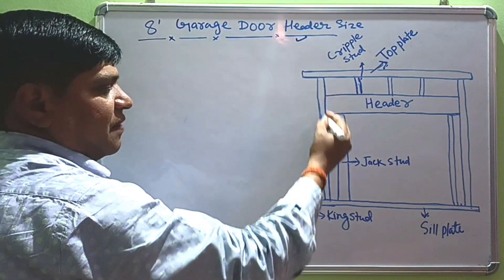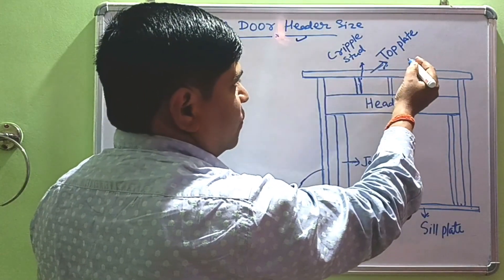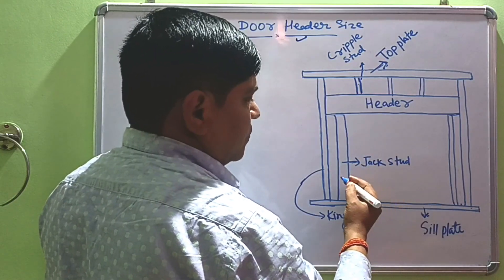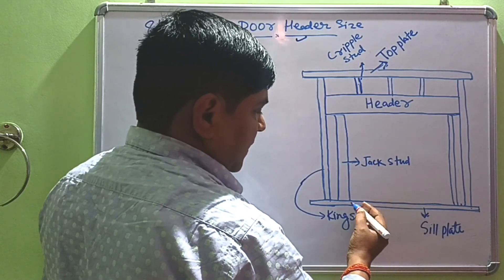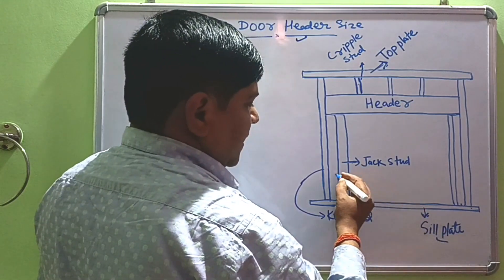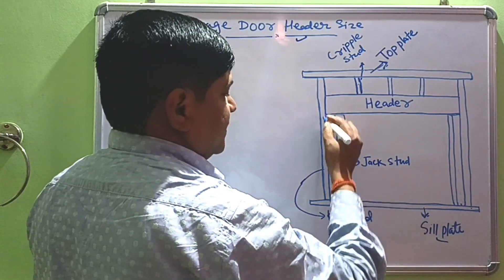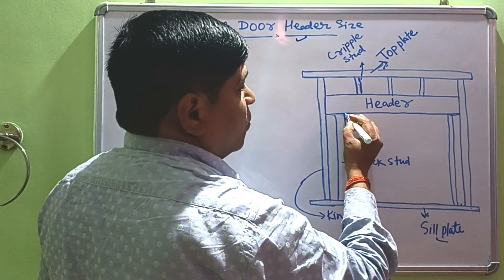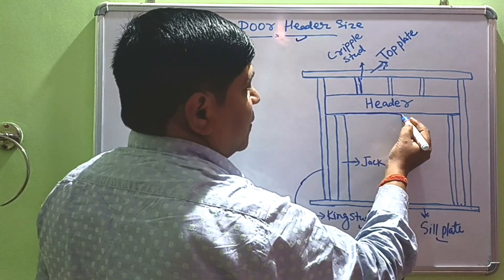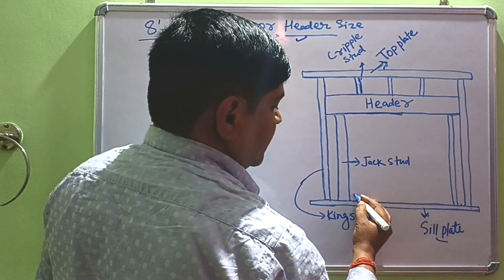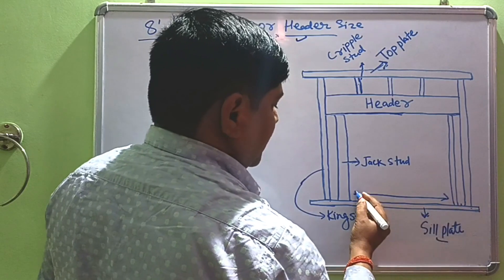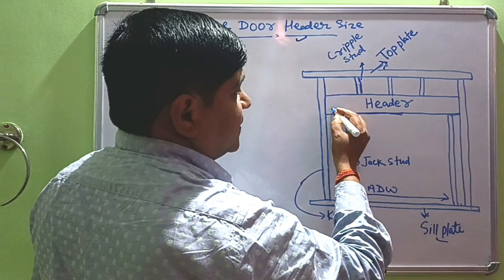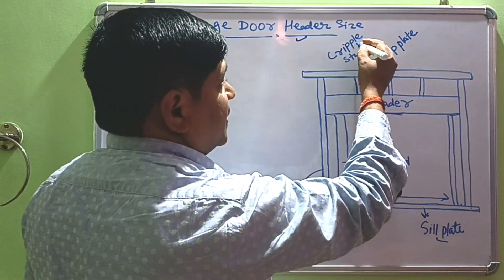Here is the rough diagram. In most cold region countries — the United States and other European countries — most houses are built of wood frame structure. Here is the sill plate, here is the jack stud, king stud, and the header is placed above the opening. This is the opening of the door, and this one is the actual door width, and this is the header.